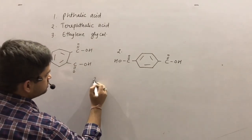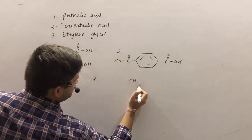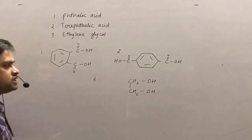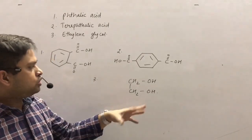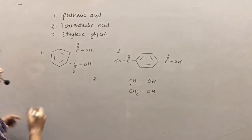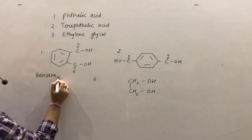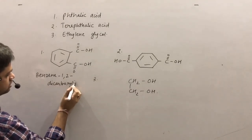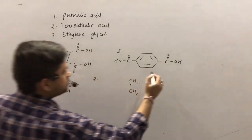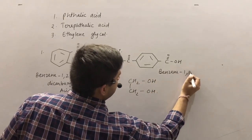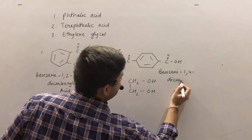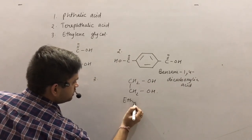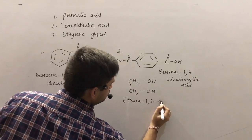Ethylene glycol is a vicinal diol, having a hydroxyl group at two adjacent carbons — this is ethylene glycol or ethylene-1,2-diol. So the IUPAC names are: benzene-1,2-dicarboxylic acid, benzene-1,4-dicarboxylic acid, and ethylene-1,2-diol.